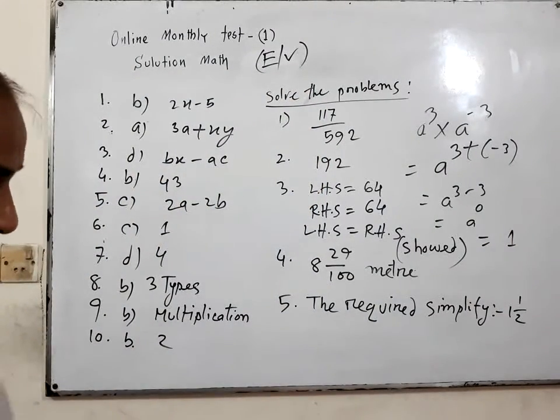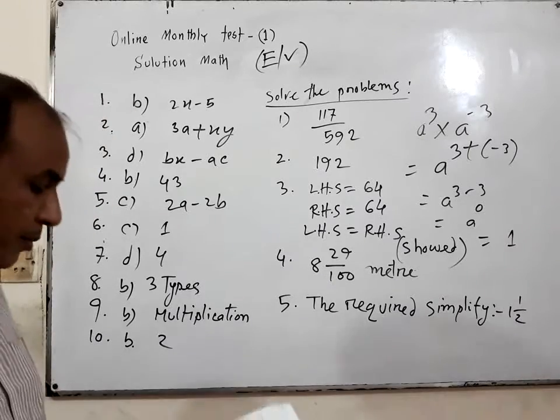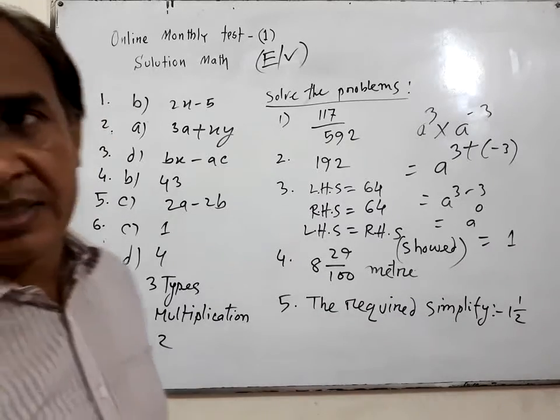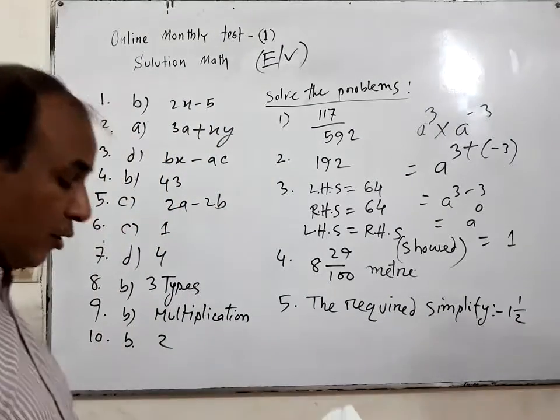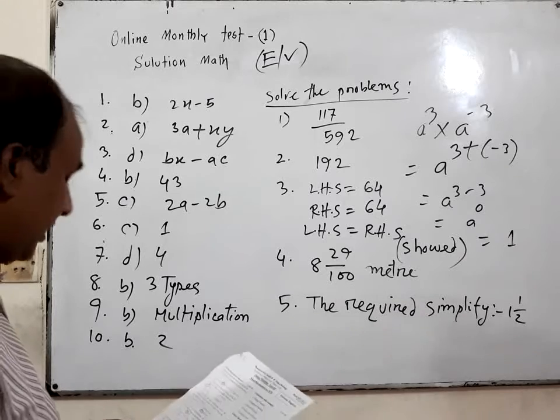Number 7. Which one is the composite number? It is 4. Here we know the smallest prime number is 2, 1 is the natural number, and 3 is also prime number.